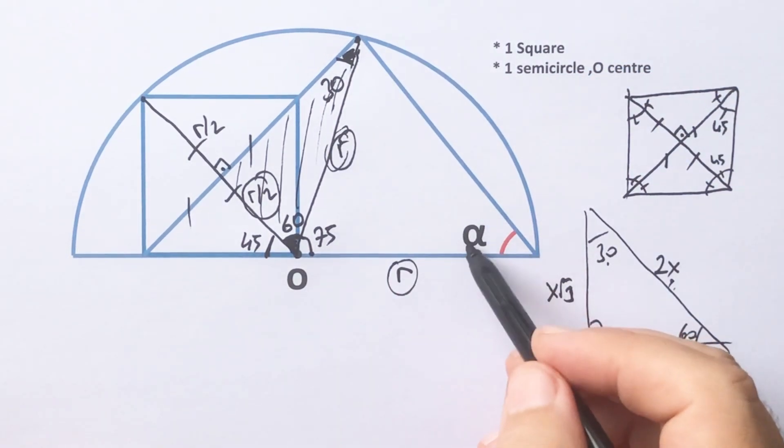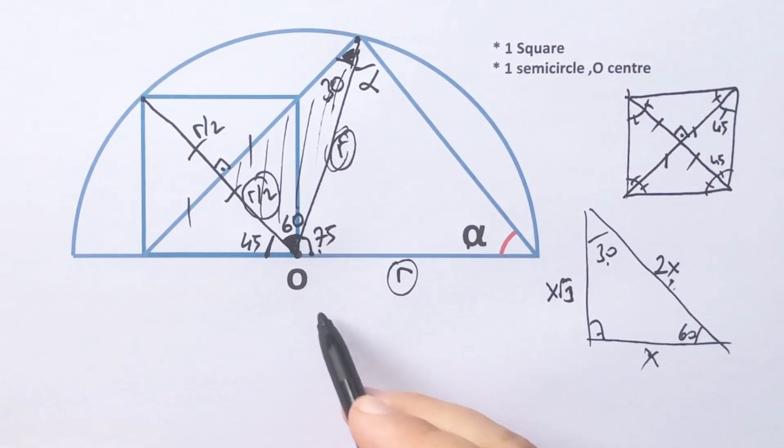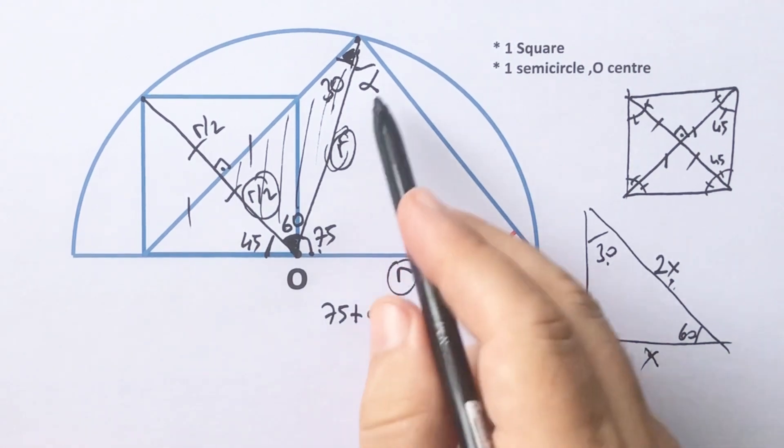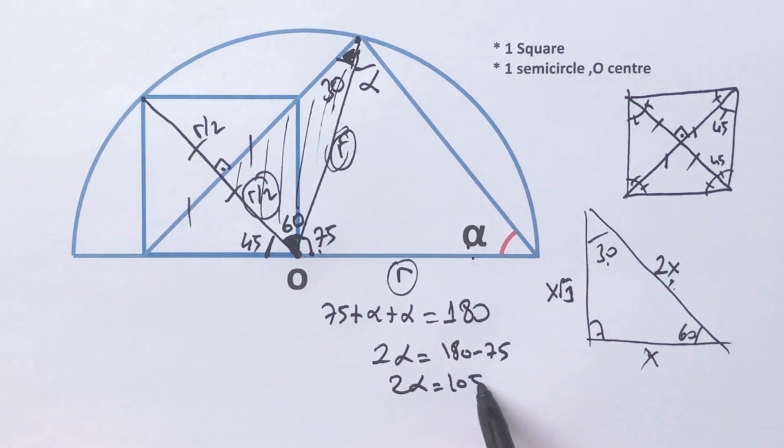So if here is alpha, this angle must be alpha. We know that sum of the interior angles equals 180 degrees, so alpha is going to be 52.5 degrees.